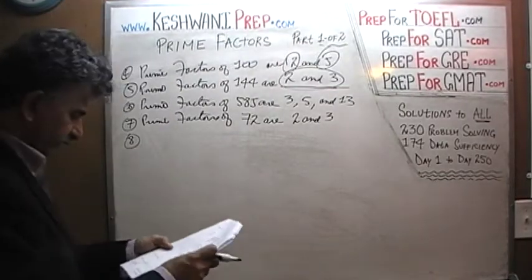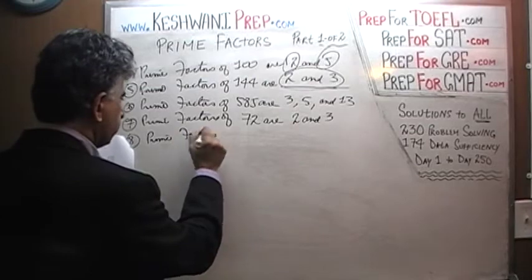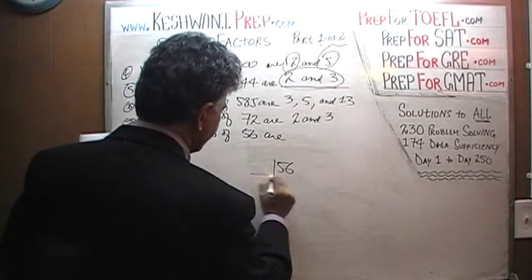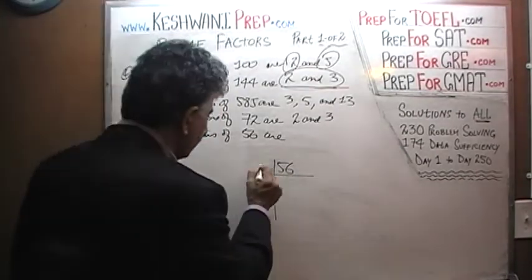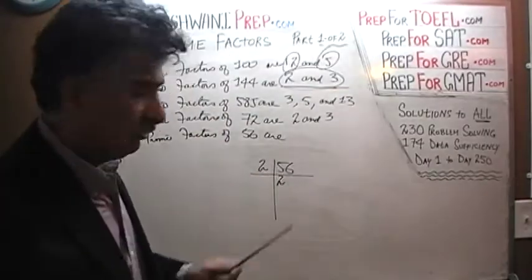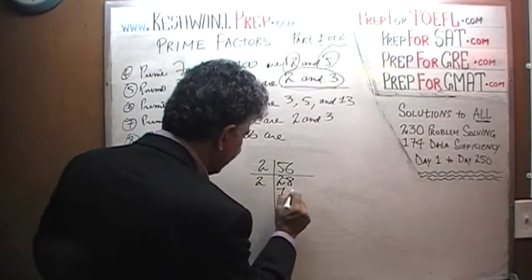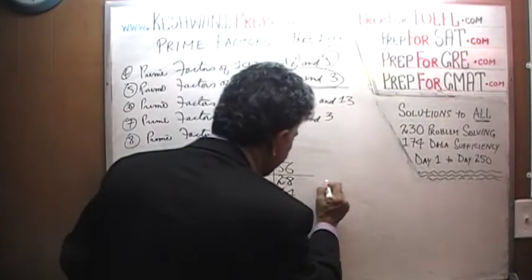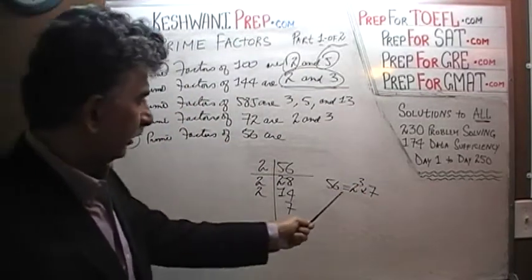Prime factors of 56. 56 is an even number and is not divisible by 3 because 5 plus 6 is 11. Dividing: 5 has two 2's; the remaining 1 joins the 6 to become 16, and 16 has eight 2's. Divide by 2 one more time and we get 14. Divide by 2 again and we get 7. So 56 equals 2 cubed times 7, and therefore the prime factors of 56 are 2 and 7.